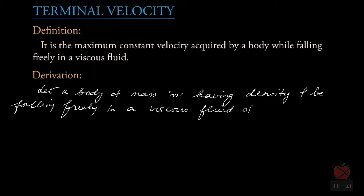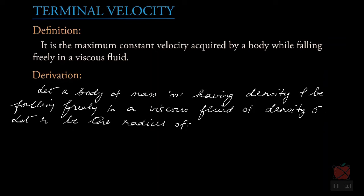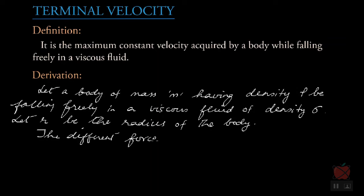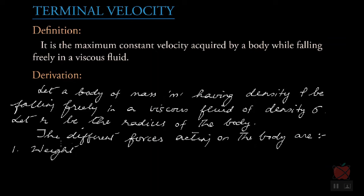The viscous fluid has density sigma. So rho is the density of the body and sigma is the density of the fluid. Let r be the radius of the body — we are considering the body to be spherical in shape, though this is true for all types of shapes. The different forces acting on the body: number one is weight mg acting vertically downward.